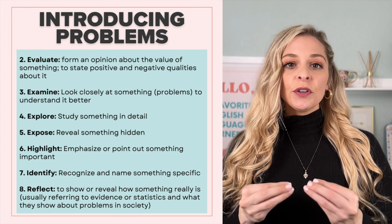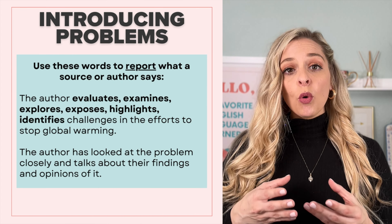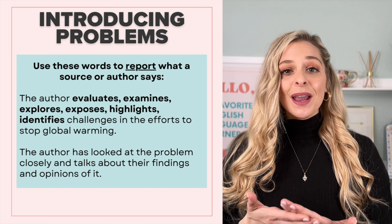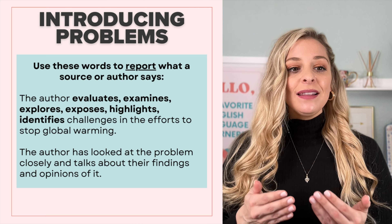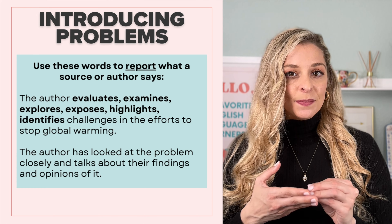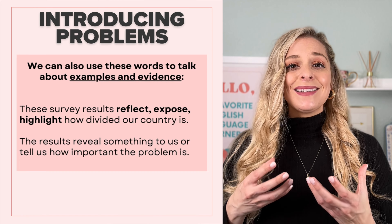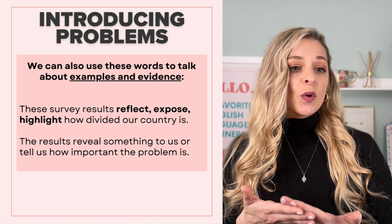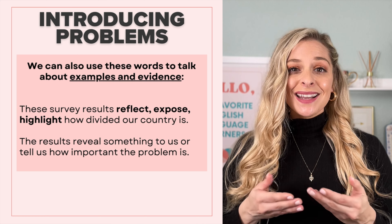This whole group of words can be super useful in a variety of situations in academia. For example, we can use these words to report what an author says or what they have studied. So you can say the author evaluates, examines, explores, exposes, highlights, or identifies challenges in the efforts to stop global warming. This means that the author has looked at the problem closely and talks about their findings and opinions of it. We can also use some of these words to talk about examples and evidence and what they show. For example, these survey results reflect, expose, or highlight how divided our country is — the results reveal something to us and tell us how important it is.